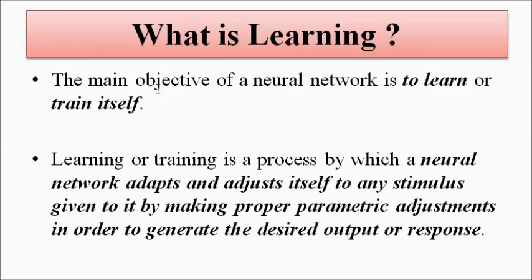Similar to that, in learning, the neural network is continuously fed with data and information. Most of the time the information is new — it is different from the previous data. So the neural network continuously has to adapt and adjust itself to the new data, the new stimulus. It has to make certain adjustments, which can be in the form of changes in the synaptic weights, the bias, or the network architecture, in order to generate the required output.